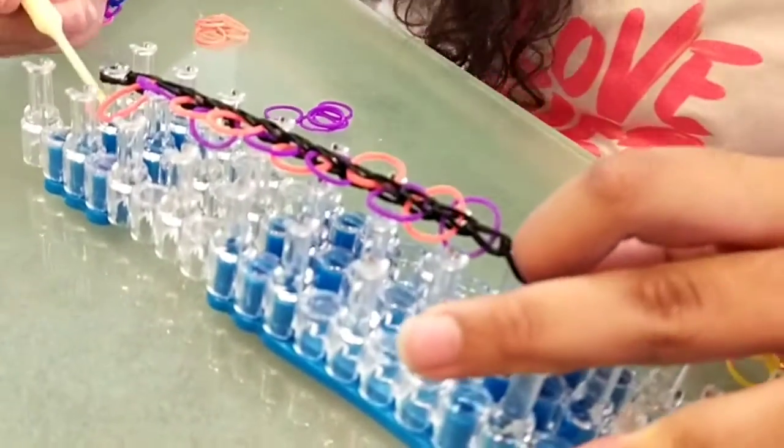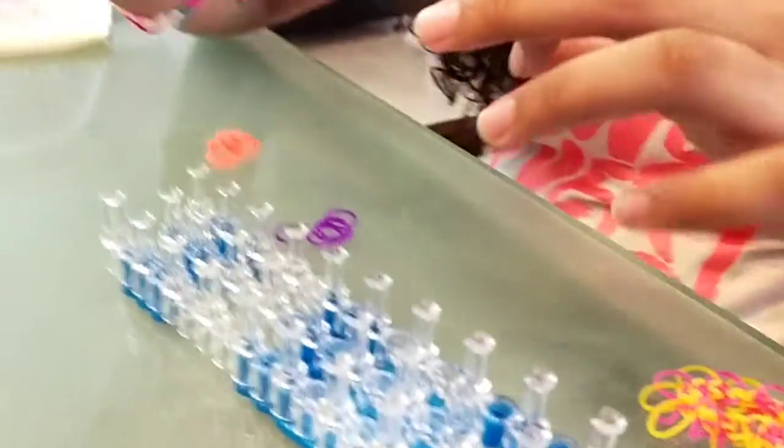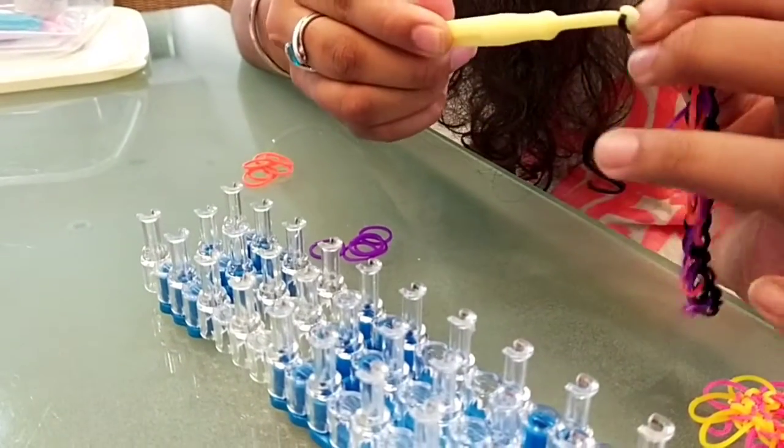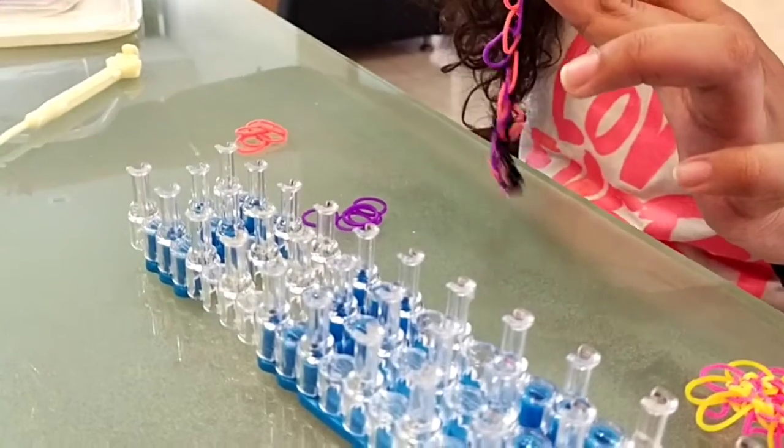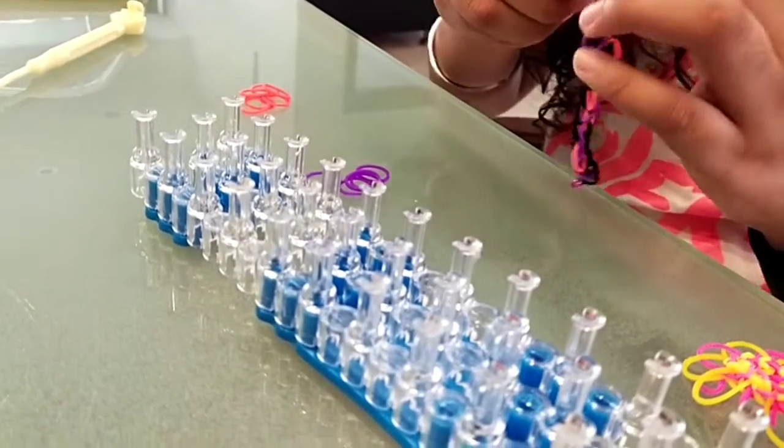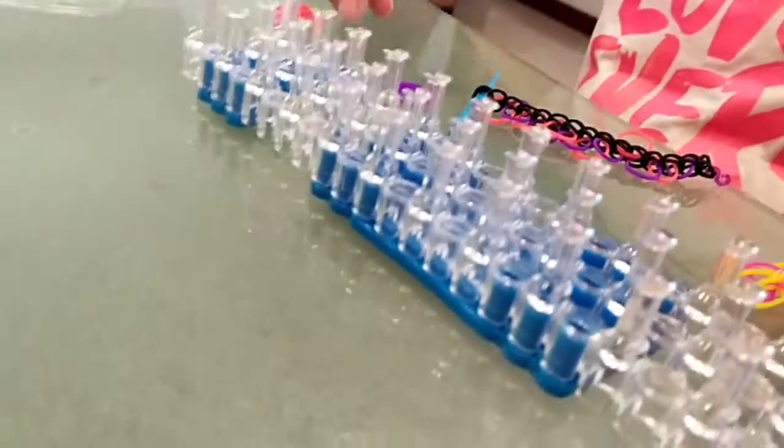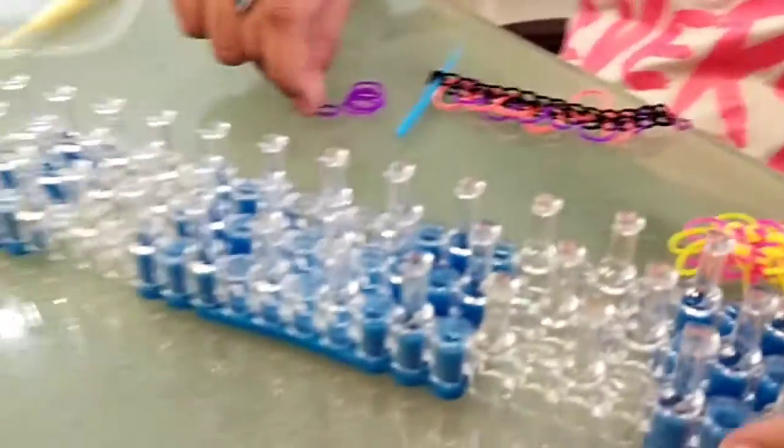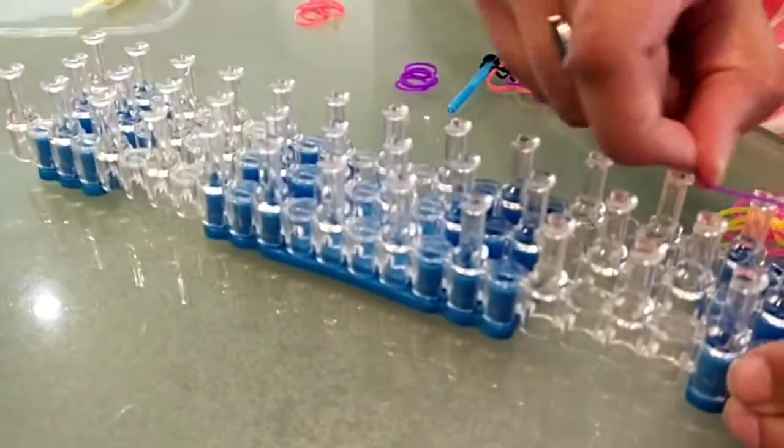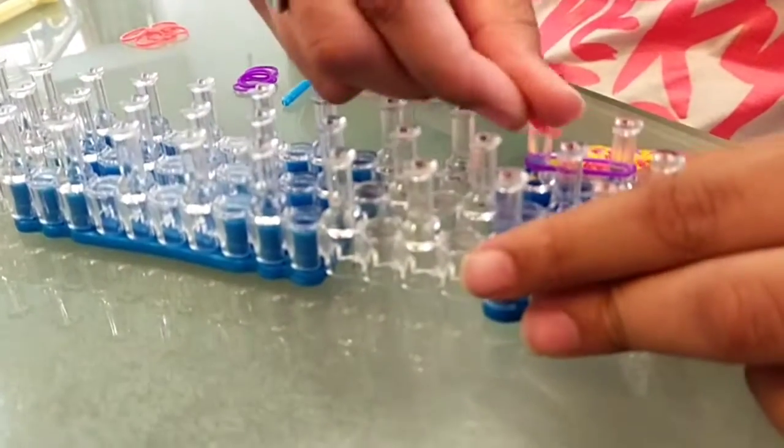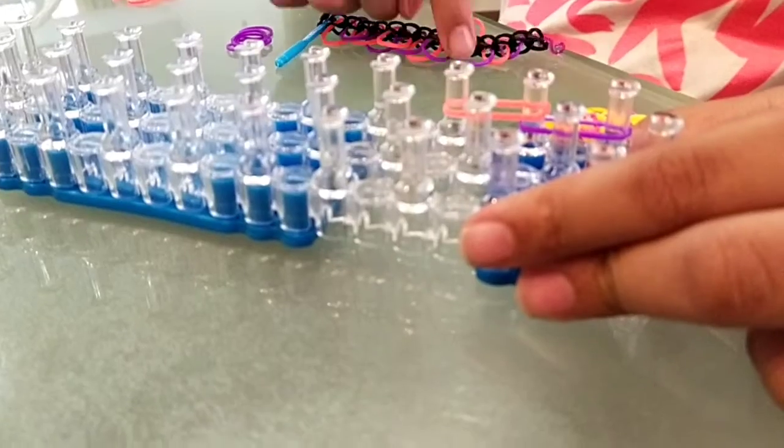And now you need to make an extension, so I can just put this onto another plastic hook. I need nine rubber bands for making the extension, so I'm going to use the pattern which I used for the inside.